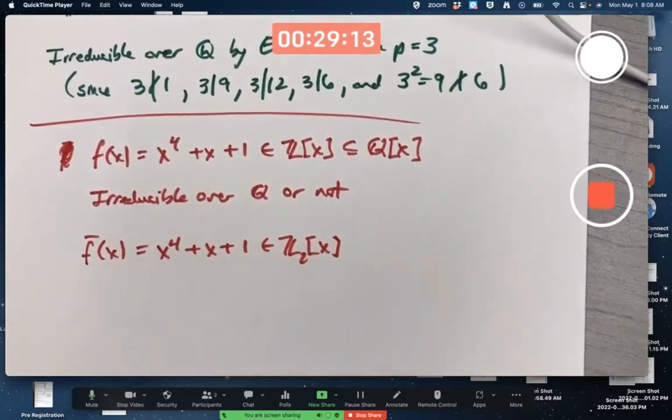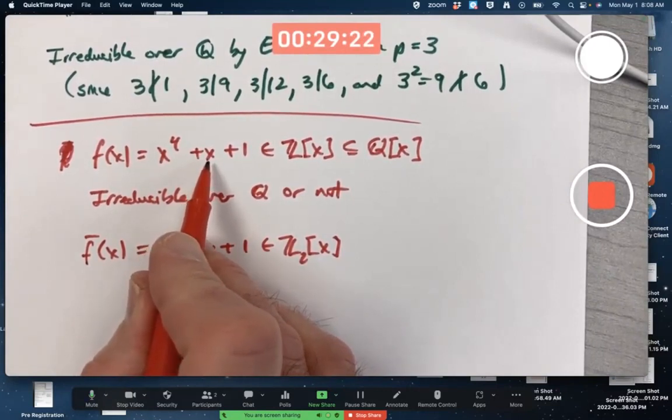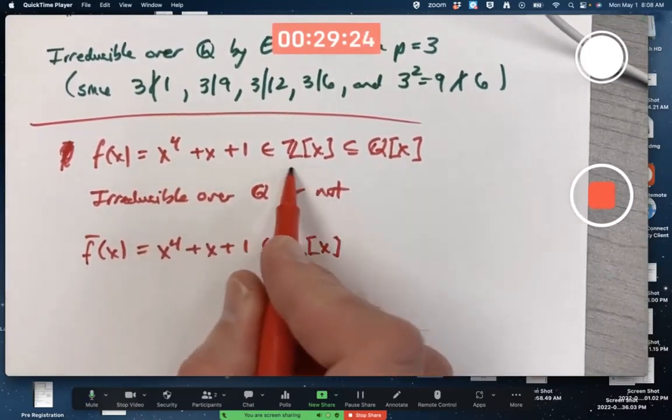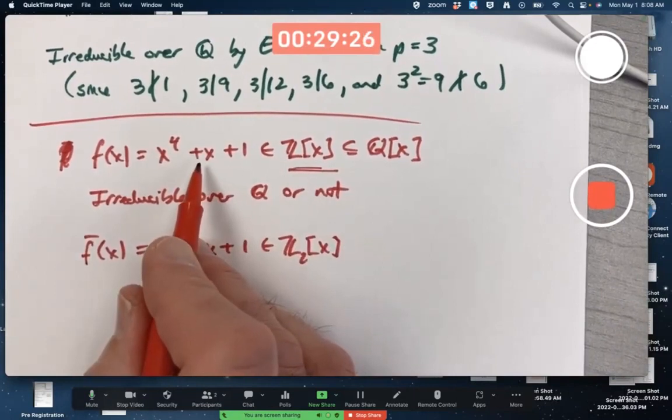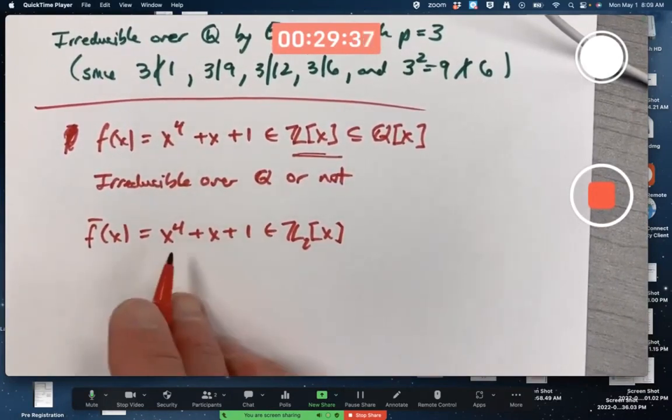Sometimes you do actually have to do something with the coefficients. Like, if this was a 2x there, or if this was a 5x there in Z originally in this polynomial ring, and you were modding by 2, you'd have to convert the 5 to a 1. If you were modding by 3, you'd have to convert the 5 to a 2.